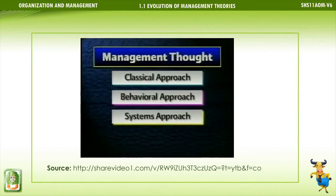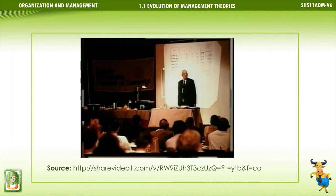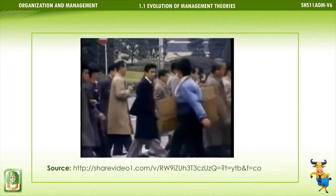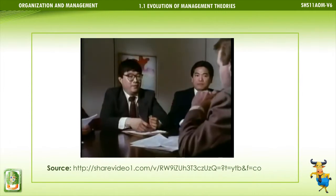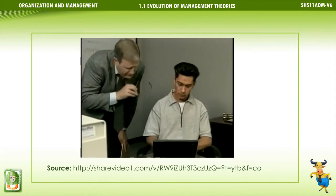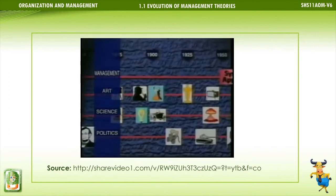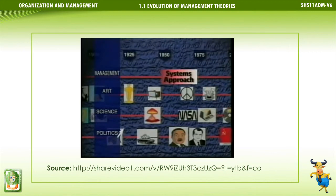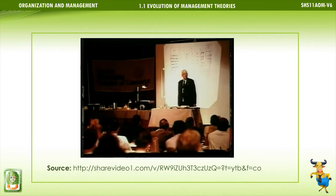The systems approach to management theory views organizations as sets of interrelated parts to be managed as a whole with the purpose of achieving a common goal. As systems, organizations consist of inputs, transformation processes, outputs, and feedback. One of the great management thinkers of this half-century is W. Edwards Deming, who has been credited with resurrecting Japan's economy in the years that followed the Second World War. He devoted much of his life to spreading his message of continuous improvement and statistical process control to improve quality. Deming thought it was necessary to integrate earlier theories into an approach in which all dimensions of the organization and its environment are considered as part of one system.